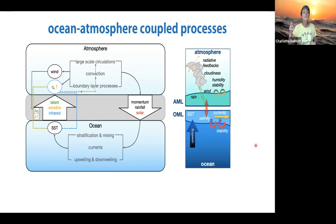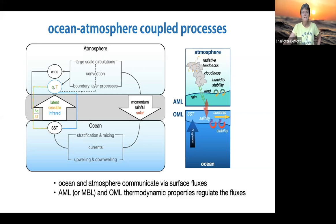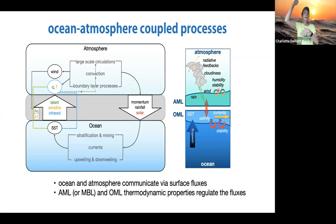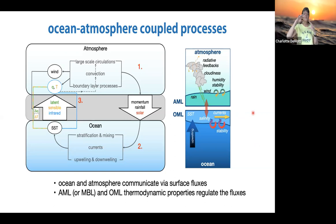This simplified picture shows surface fluxes between the atmospheric mixed layer—sometimes called the lean boundary layer—and the ocean mixed layer. These fluxes are regulated by processes both at the surface and at the upper and lower boundaries of these mixed layers that affect thermodynamic properties. For the remainder of the talk, I'll break this feedback cycle into three phases: first, the atmospheric forcing of the ocean; second, the ocean response to that forcing; and third, the ocean feedback to the atmosphere.